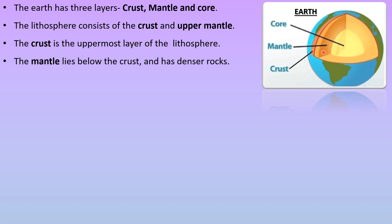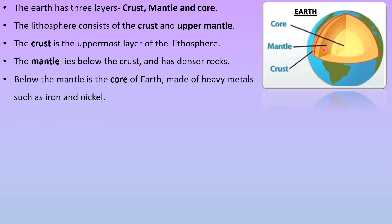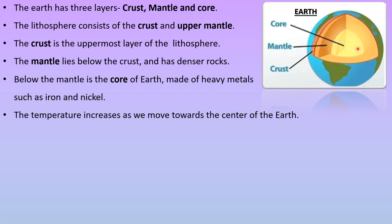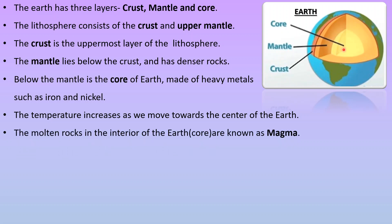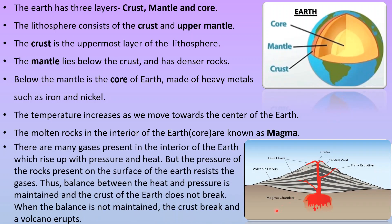The mantle lies below the crust and has denser rocks. Below the mantle is the core of the Earth, the bed of heavy metals such as iron and nickel. The temperature increases as we move towards the center of the Earth. The molten rocks in the interior of the Earth are known as magma. There are many gases present in the interior of the Earth which rise up with pressure and heat, but the pressure of the rocks on the surface presses the gases. Thus, a balance between heat and pressure is maintained and the crust does not break. When the balance is not maintained, the crust breaks and a volcano erupts.